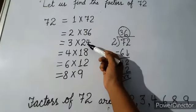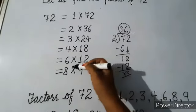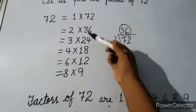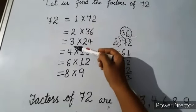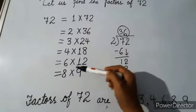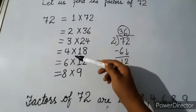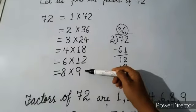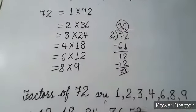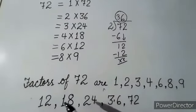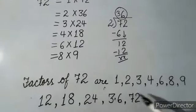Continuing: three times twenty-four is seventy-two, four times eighteen, six times twelve, eight times nine. So the factors of seventy-two in increasing order are: one, two, three, four, six, eight, nine, twelve, eighteen, twenty-four, thirty-six, and seventy-two. These are all the factors of seventy-two.